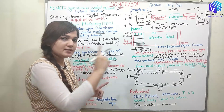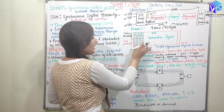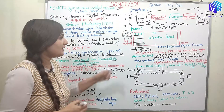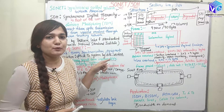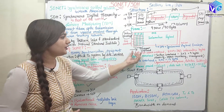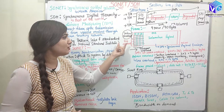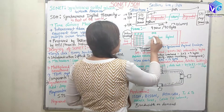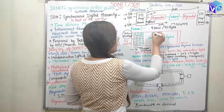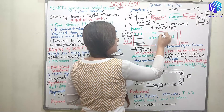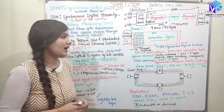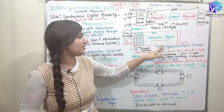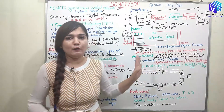In the transport overhead, the first three rows are called the section overhead and the last six rows are called the line overhead. The transport overhead is thus divided into section overhead and line overhead. The remaining 87 bytes contain the information payload, also known as the Synchronous Payload Envelope (SPE).